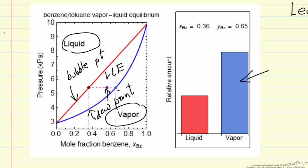...you notice on the bar graph, we have more vapor than liquid. The lever rule will allow us to calculate how much of each. And we are given the compositions of the vapor and the liquid here.